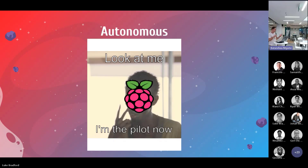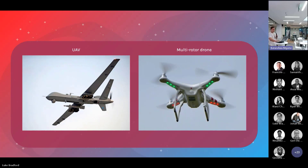There are also two other fields that fall under autonomy. One is self-maintenance — the drone being able to recharge or refill itself. The other is sensing the environment around it, such as having a camera or some other type of sensor. Most people think of two drone types: a UAV or unmanned aerial vehicle, and a multi-rotor drone.